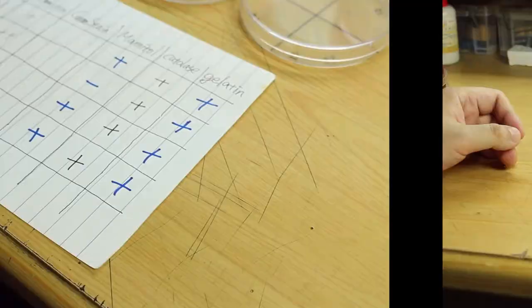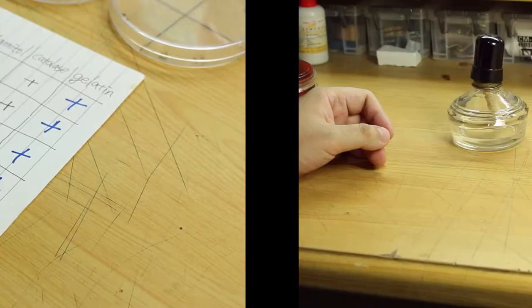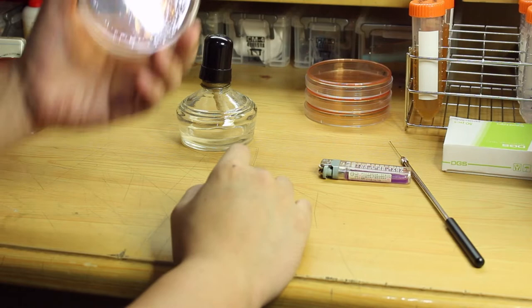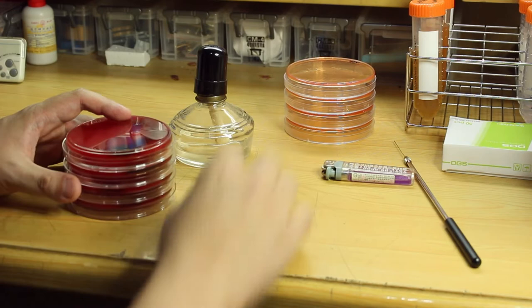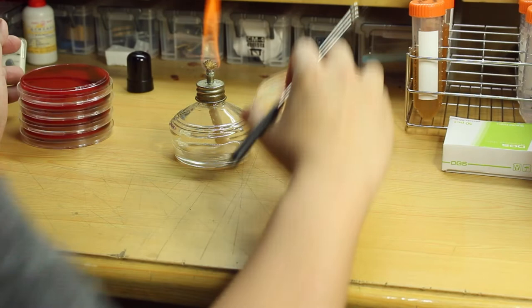The fourth test is the mannitol test, in which I'll be using this mannitol salt agar. This agar contains mannitol and high concentration of salt, which can be used to test two properties of a bacteria: first being if the bacteria can grow in a high salt environment, second being if the bacteria can hydrolyze mannitol and generate acid.